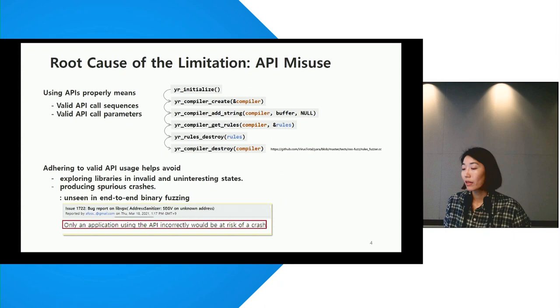The major reason for the limitation is misusing APIs. Using APIs properly means being able to call the APIs in the right sequence and providing the right input values to the API arguments while understanding how the arguments are related. For example, the YARP project demands that the initialization, creation, and destroyer APIs be invoked in that order, and that the same compiler object be supplied as an argument for multiple APIs.